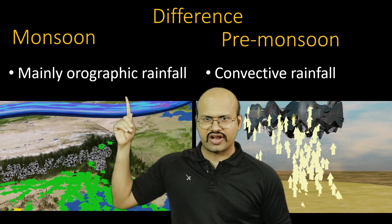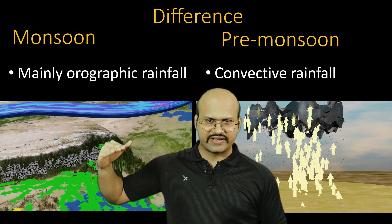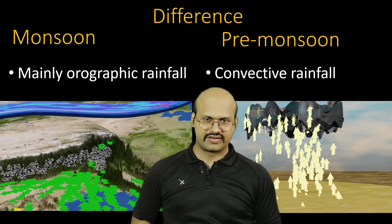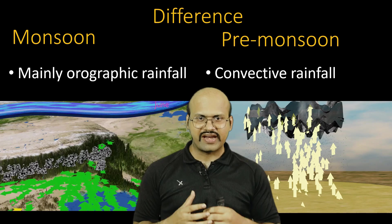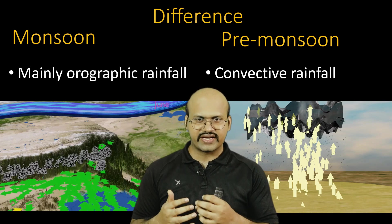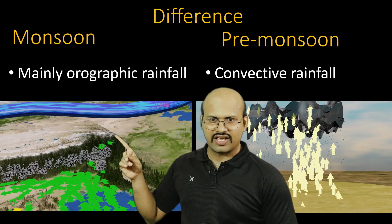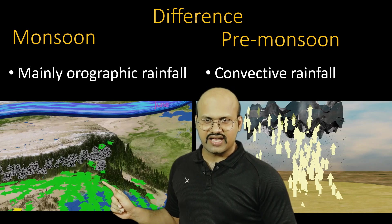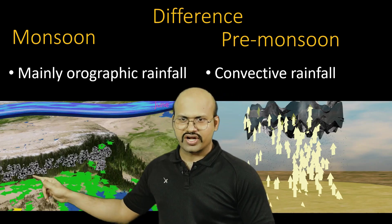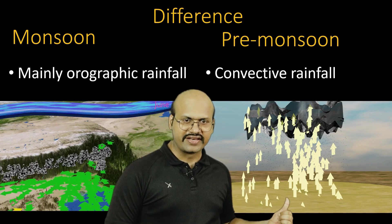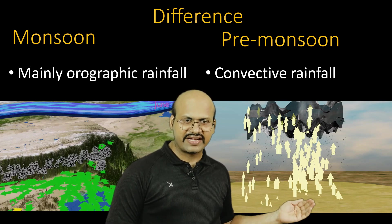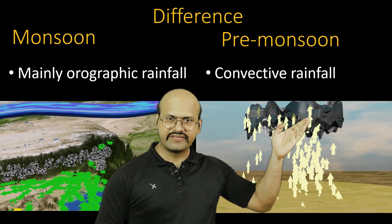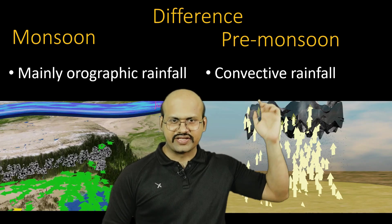Monsoon rainfalls are mainly orographic in nature — when air is flowing and is blocked by a mountain, it tries to flow over the mountain, causing adiabatic cooling of the rising air and giving rainfall. We can see the eastern Himalayas and Himalayas where monsoon winds flow over these mountains, producing orographic rainfall. In contrast, pre-monsoon rainfall is convectional — the land is heated by sunlight, the air in contact with the land gets heated, rises up, and gives rainfall.